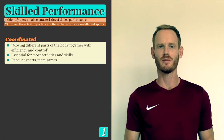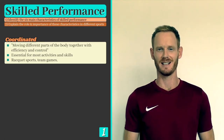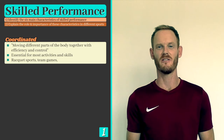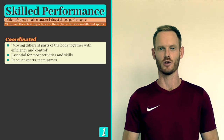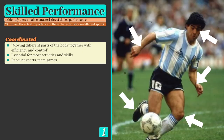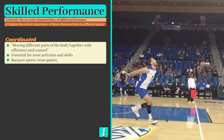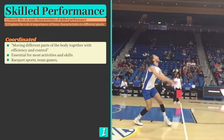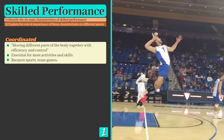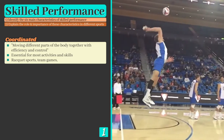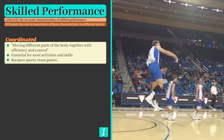Coordination means moving different parts of the body together with efficiency and control. Almost all skills and movements in sport require the performer to use multiple body parts and muscle groups concurrently. For example, when serving in volleyball, the server uses their legs to generate momentum and their arms and eyes to strike the centre of the ball.